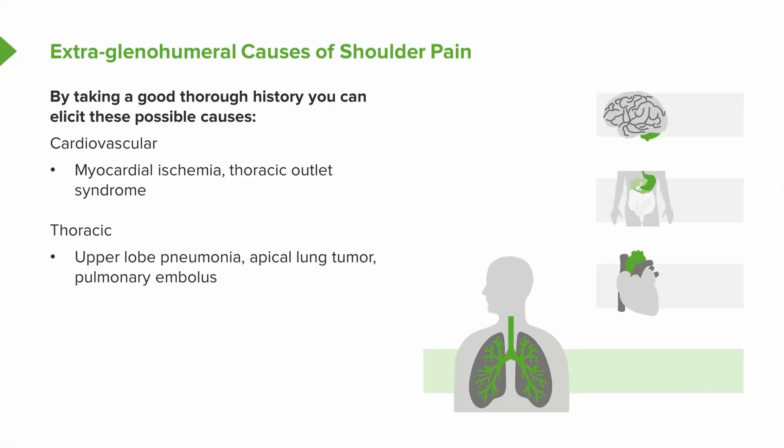Infections of the lungs and thoracic cage could also refer pain due to irritation of the pleura. Any sort of apical lung tumor may also irritate the viscera and cause referred pain to the shoulder. You also always have to rule out pulmonary embolism as a potential cause of shoulder pain.